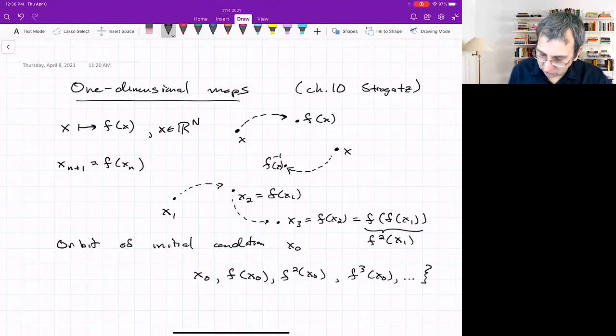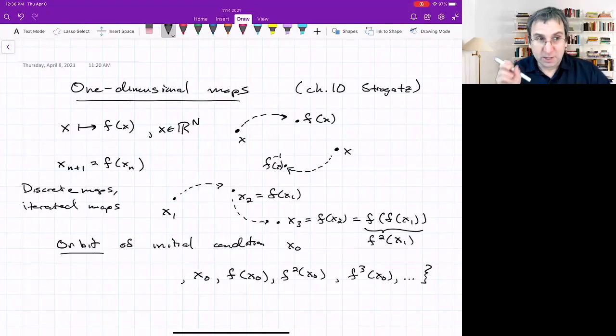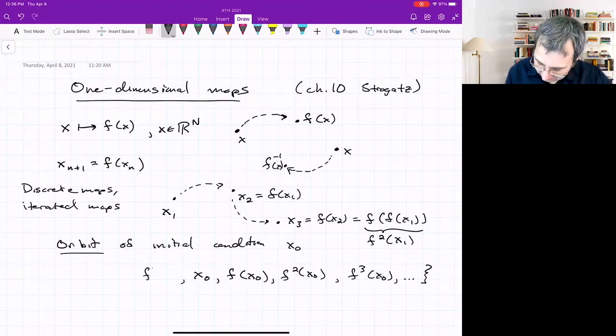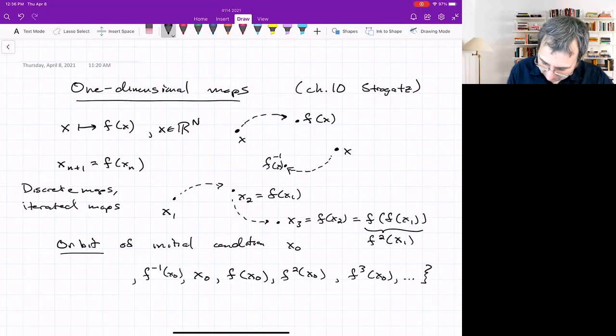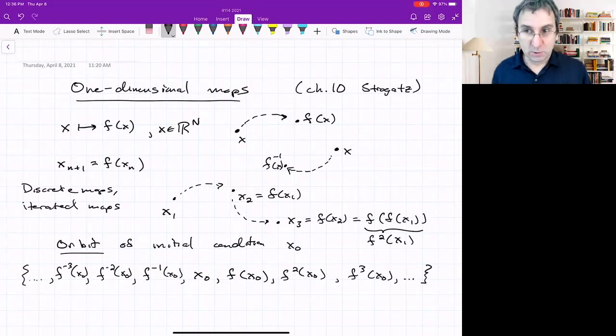So sometimes these are called discrete maps or just maps or iterated maps. The orbit includes not just the point and going forward, but because of the inverse, we could look at the points that came from there and which mapping forward would take us to that point. So it's an infinite sequence of points in Rn. That would be the orbit of an initial condition under the map.